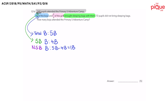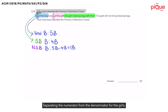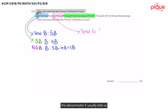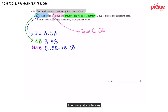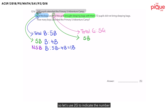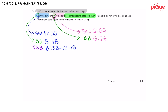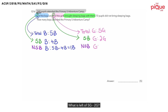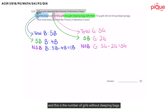Can you do the same for the girls? Separating the numerator from the denominator for the girls: the denominator 5 tells us the total number of girls, which we denote as 5G. The numerator 2 tells us the number of girls with sleeping bags, so we use 2G to indicate that. 5G minus 2G gives us 3G, and this is the number of girls without sleeping bags.